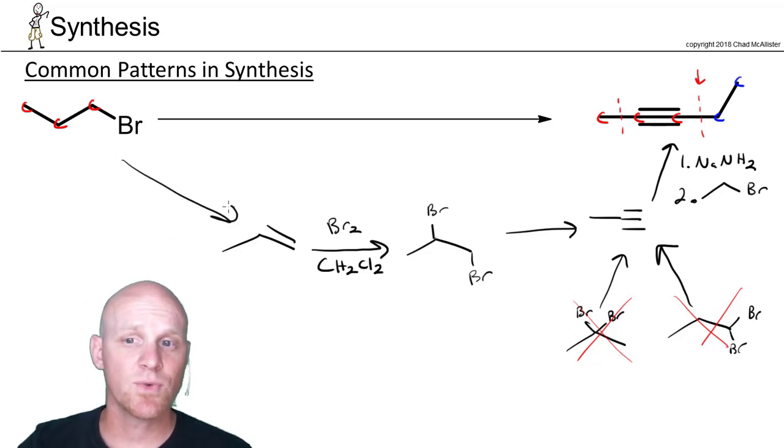Well, we make an alkene through an elimination reaction. We already have our good leaving group, the bromine, and in this case, it's on a primary carbon, so we've got to worry about SN2 and E2 competing. If I want to make sure that we do E2, I should use the bulky base.